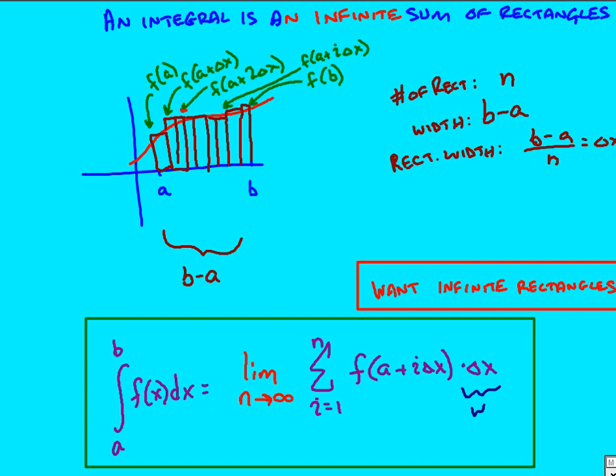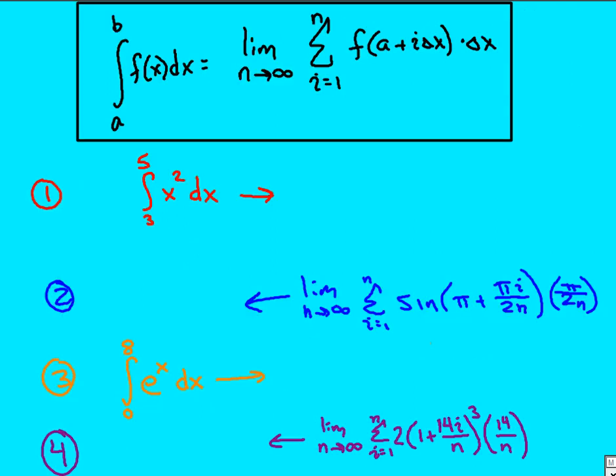That's the equation that we use: the limit as n approaches infinity of this. So mainly what we have to do is we have to be able to go back and forth between these two different representations of using the integral symbol and using the sigma notation.